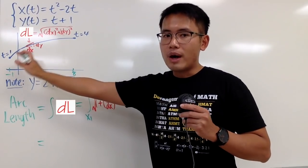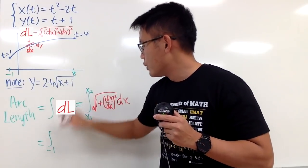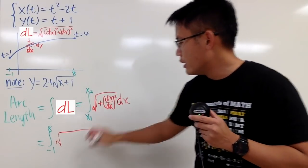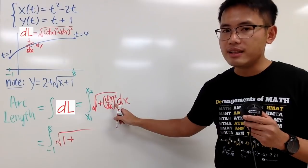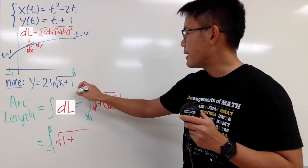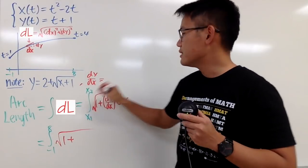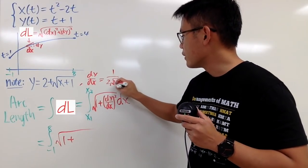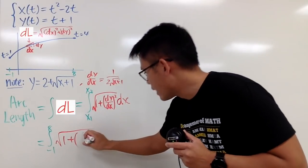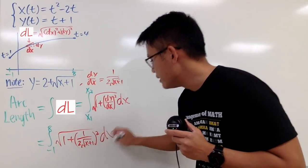Therefore, the arc lengths from 1 to 4 in the t values is the same as the integral from -1 to 8. And these are the x values. You just use this formula now, you have 1 plus, well, I need the derivative. I'll look at here, and I'll differentiate y with respect to x. You get dy/dx is equal to, derivative of 2 is 0, derivative of this is 1/(2√(x+1)). So you just put this right here, and you're pretty much done. So you just write down 1/(2√(x+1)), and then you square that, and you have the dx on the very outside.